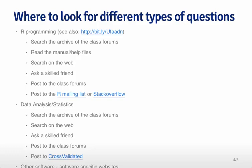An important question is where to look for different types of questions. For R programming, you might want to go straight to the archive of the class forums, where the class you're taking will focus on very specific questions or functions and there'll be a large group of interested people. You can read the manual or help files, search on the web — which is actually one of the best ways — ask a skilled friend, or post to the class forums. Remember to be specific with your questions.